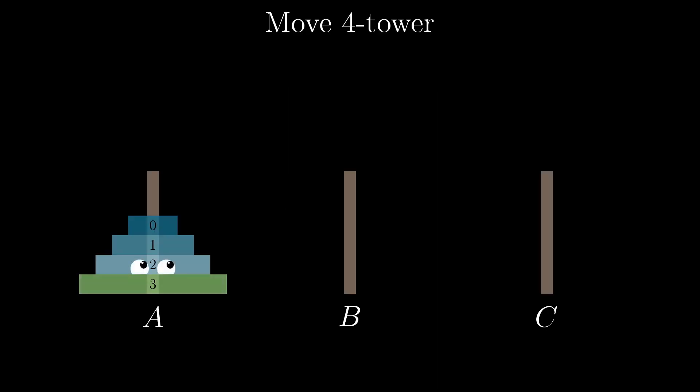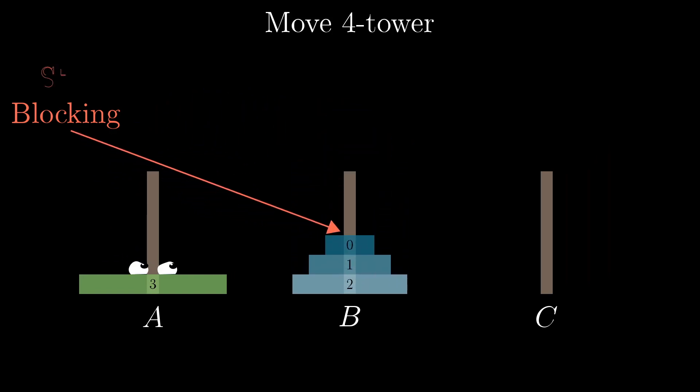But the idea for this modified version is still similar. If I want to move disk three, let's say I'm trying to get it from A to C, I can't move disk three unless this tower above it, two, one, and zero, are out of the way. So ultimately, I'd like to get this tower to be not blocking it, but there's two ways it can block it now. It has to not only not be on top, it can't be adjacent either.